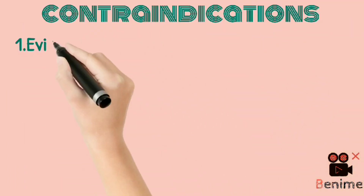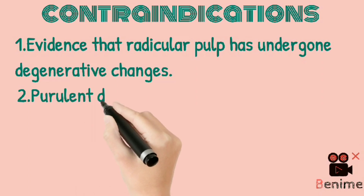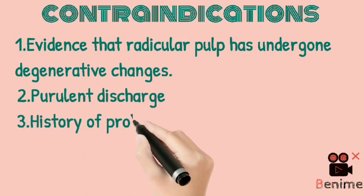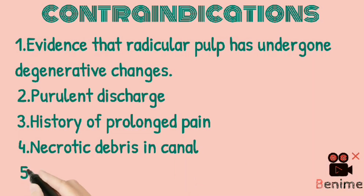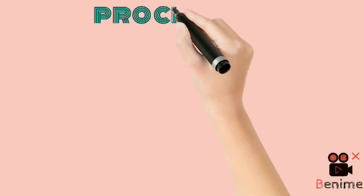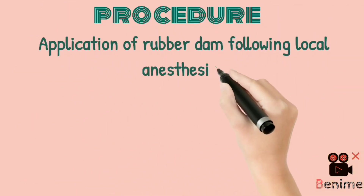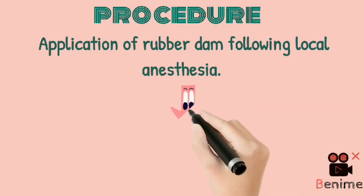Moving on to contraindications: in cases where there are degenerative changes, purulent discharge, history of prolonged pain, necrotic debris in canal, and periapical radiolucency, we should avoid this treatment.